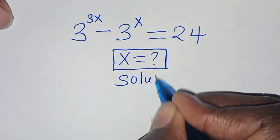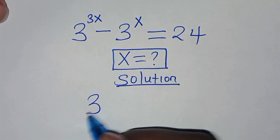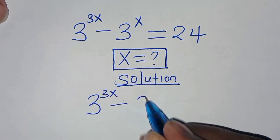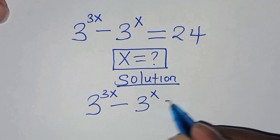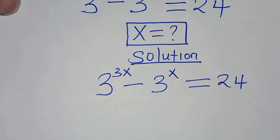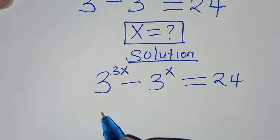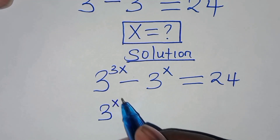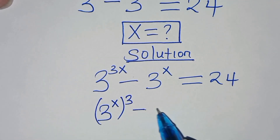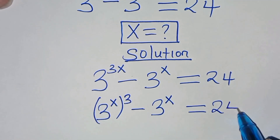From here, we have 3 to the power 3x, subtract 3 to the power x, this is equal to 24. Now, 3 to the power 3x can be expressed as 3 to the power x, raised to the power 3, subtract 3 to the power x, this is equal to 24.